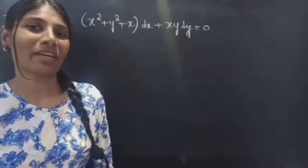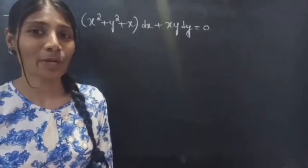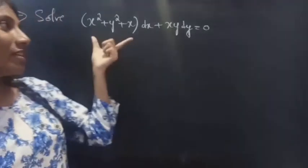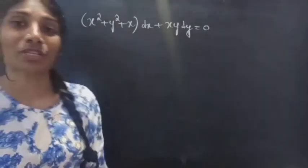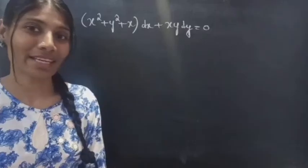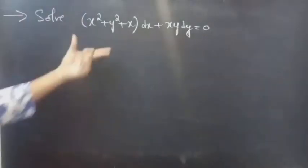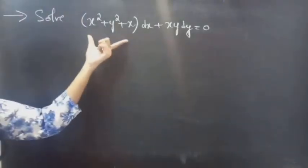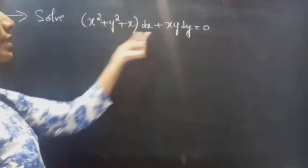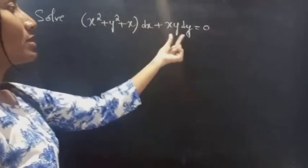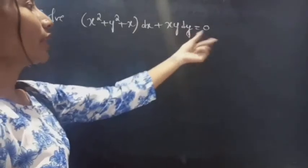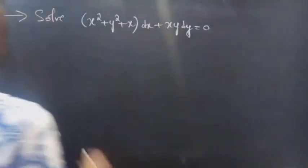Hello everyone, this is Jay Kaltanah here. In this video we are going to solve the given differential equation. So let's get going. Solve: x squared plus y squared plus x, into dx, plus xy into dy equals to 0.